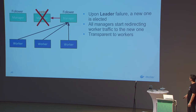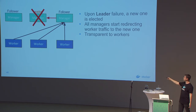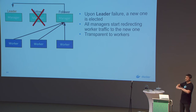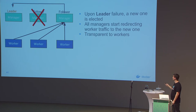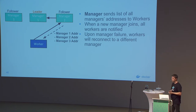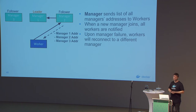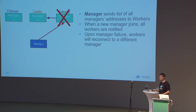On failure, there's a new round of election: we promote a follower to leader, and all other managers are aware of the new leader and forward traffic automatically. It's completely transparent to the workers. Additionally, whenever a worker connects to a manager, it gets a list of all other available managers in the cluster, and we keep that list up to date. If a manager fails, the worker will randomly reconnect to a different manager automatically.